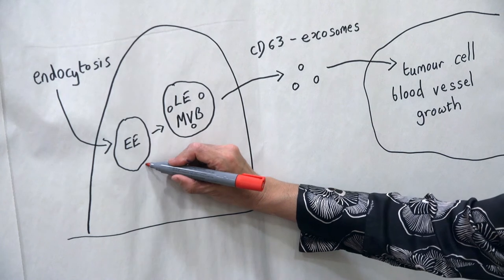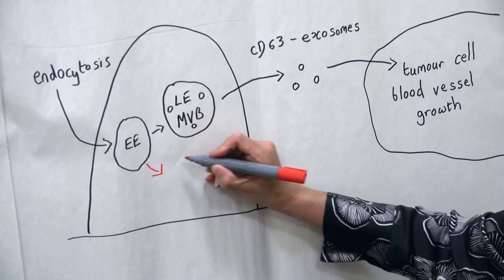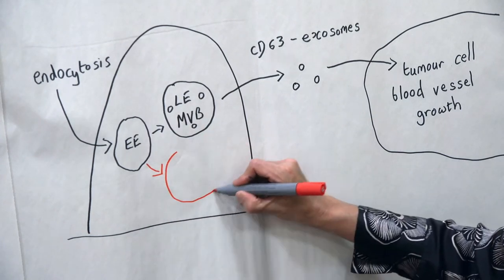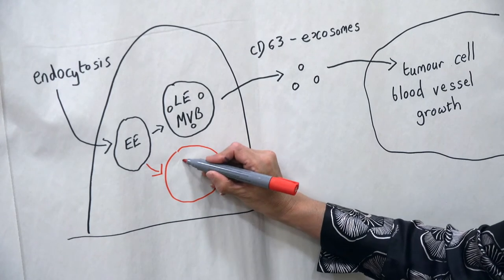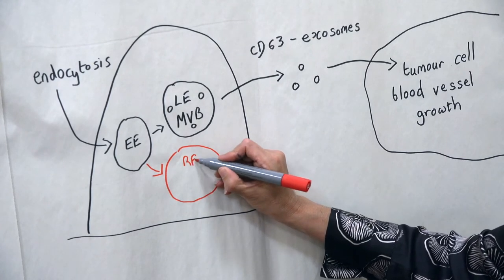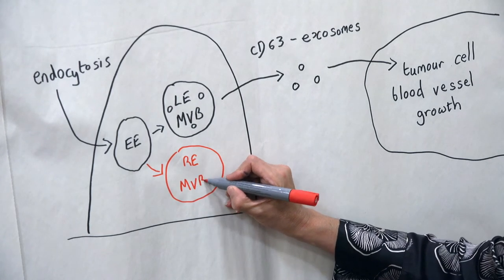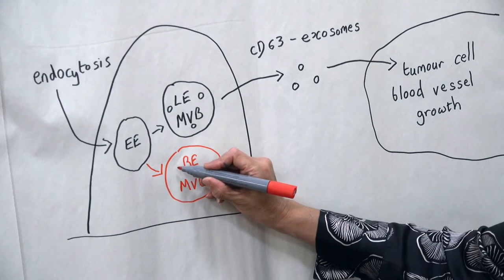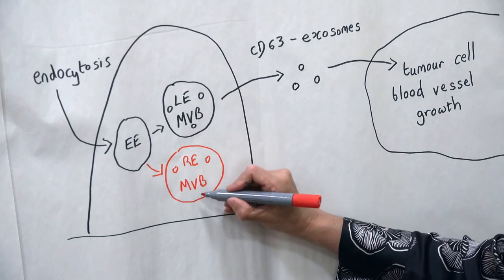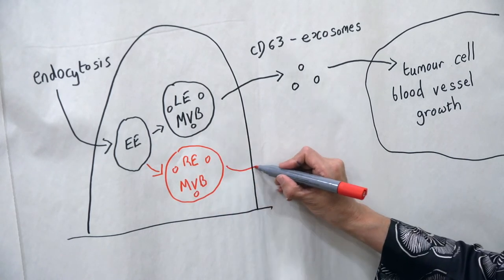In our paper we show that exosomes are not only made in late endosomes, but also in completely different compartments called recycling endosomes, producing vesicles that we have termed RAB11a exosomes. To identify these exosomes, our collaborative team has combined studies in fly and human cancer cells.